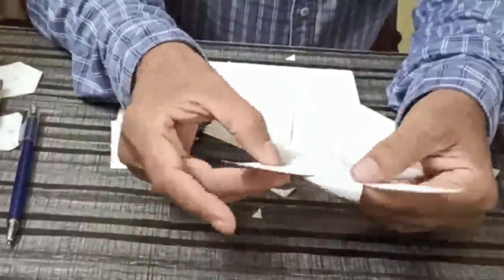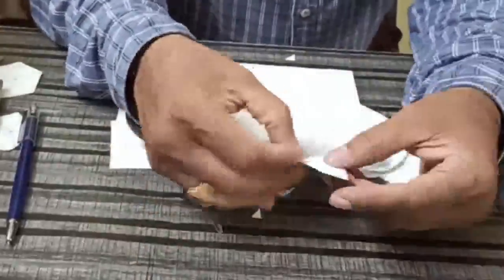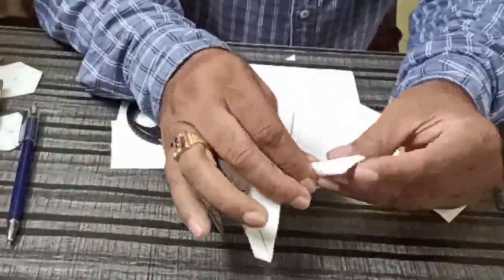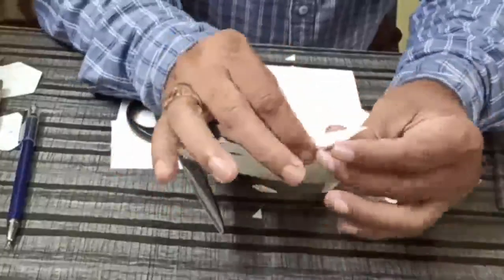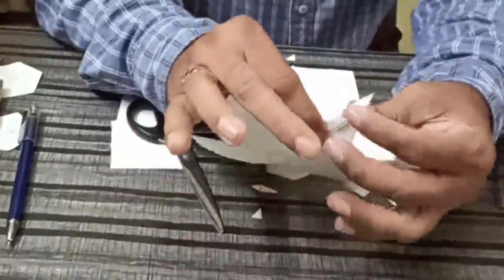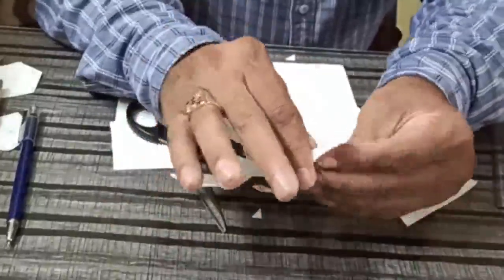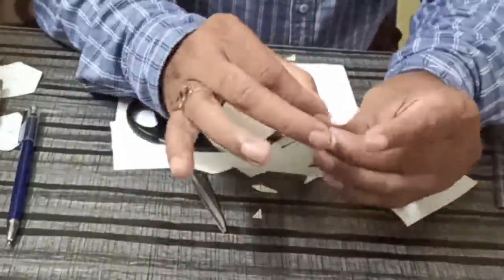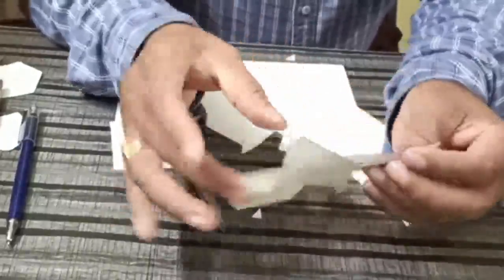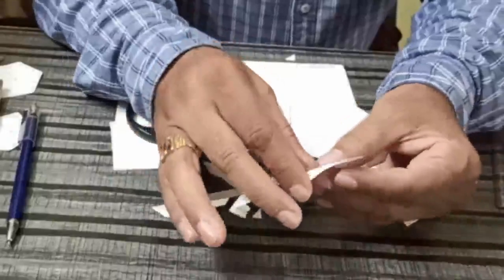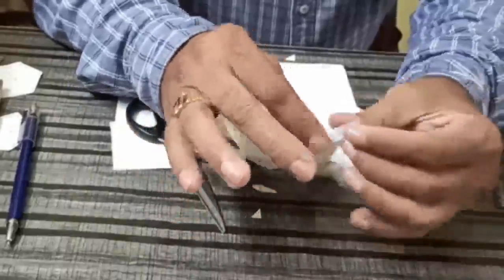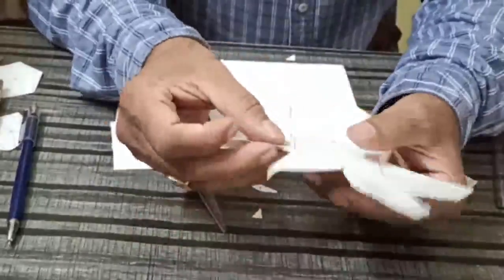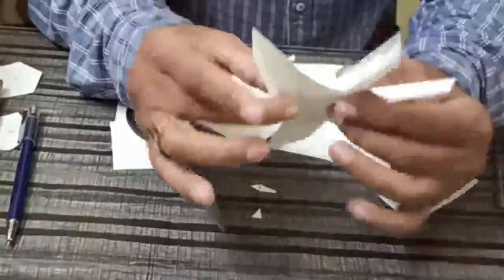Now I'll fold the border. I'm not using glue now because it will take more time, and friends you can use it later. Now we'll fold the sides.